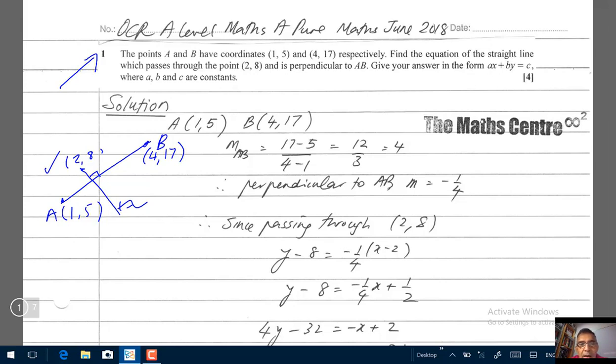So let's label this point C and let's call this line CD. So we need to find the gradient of CD. Before that, let's go ahead and find the gradient of AB because we can use the idea of perpendicularity.